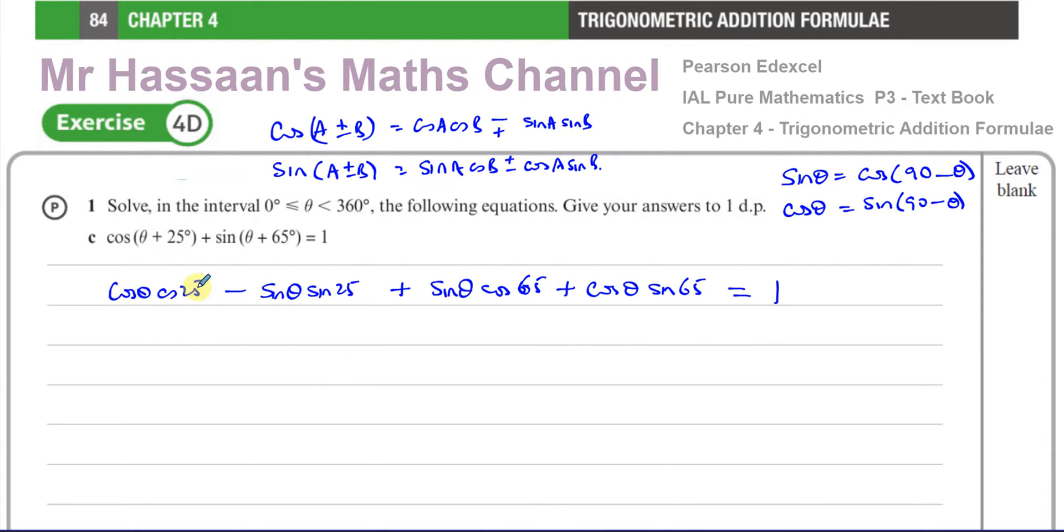I can replace cos(25°) with sin(65°). So I can write this as cos(θ)sin(65°) minus, I can call this cos(65°), so this is sin(θ)cos(65°). Now I have everything in terms of 65°. This is sin(θ)cos(65°) plus cos(θ)sin(65°), equals 1.